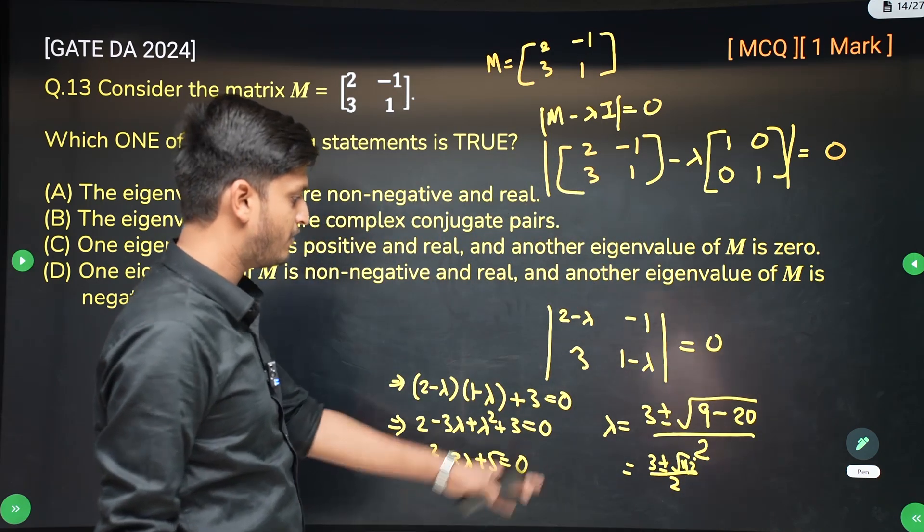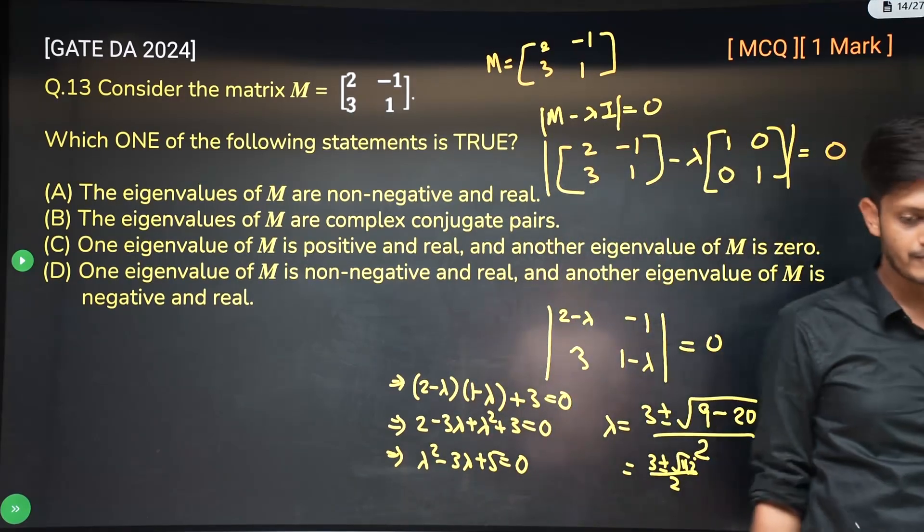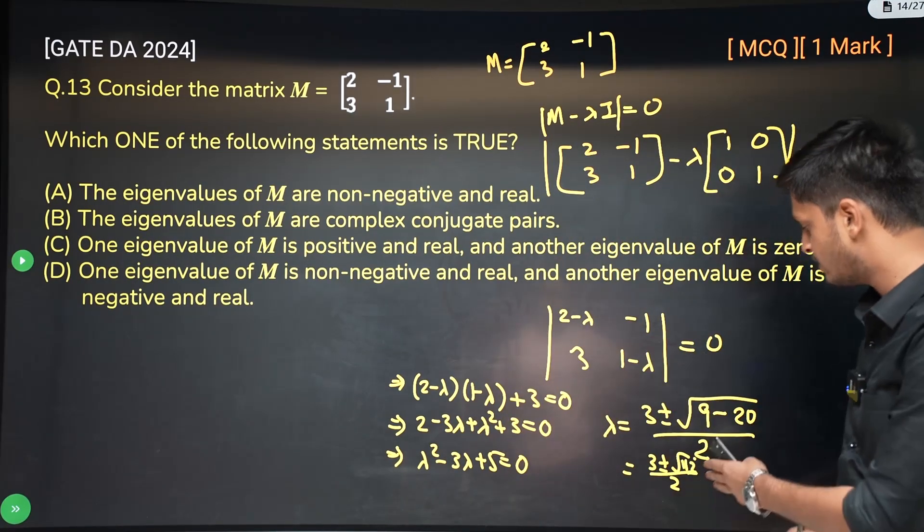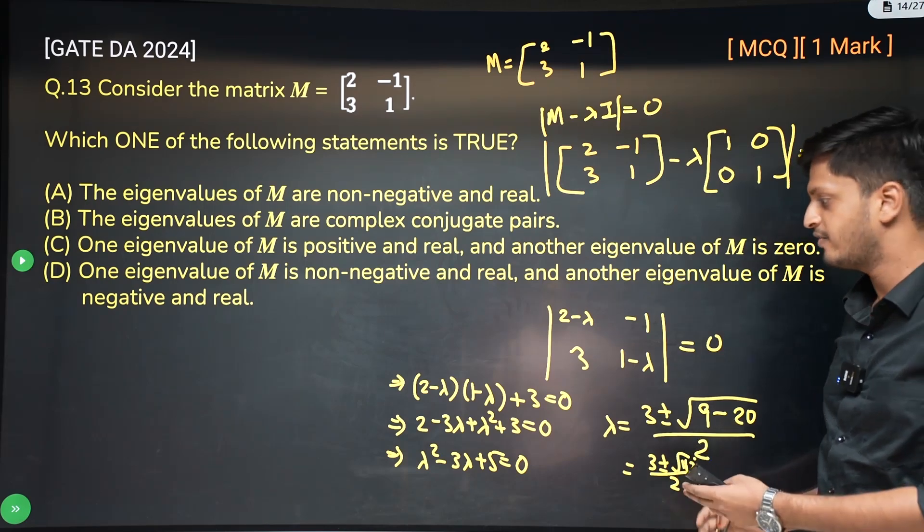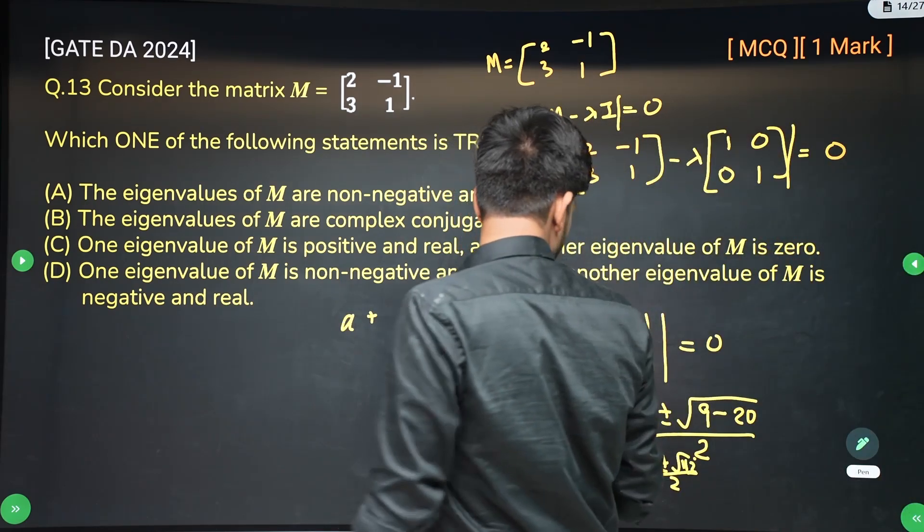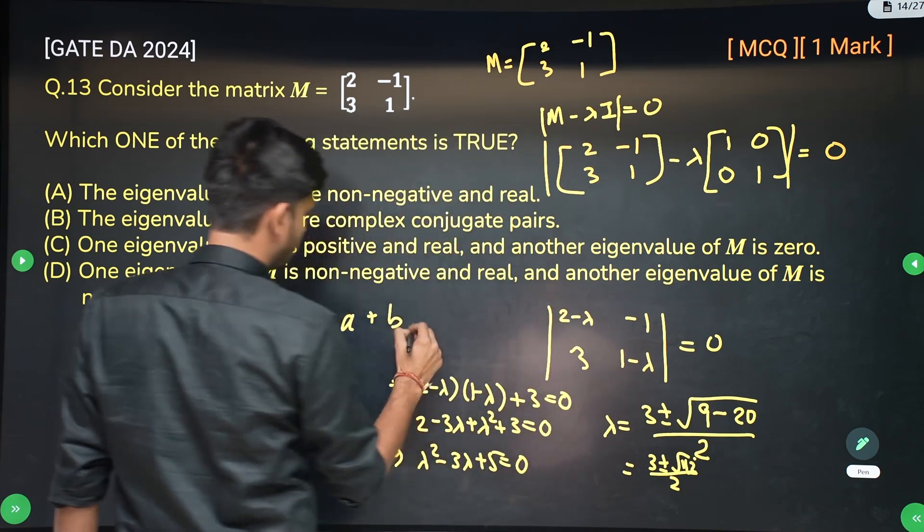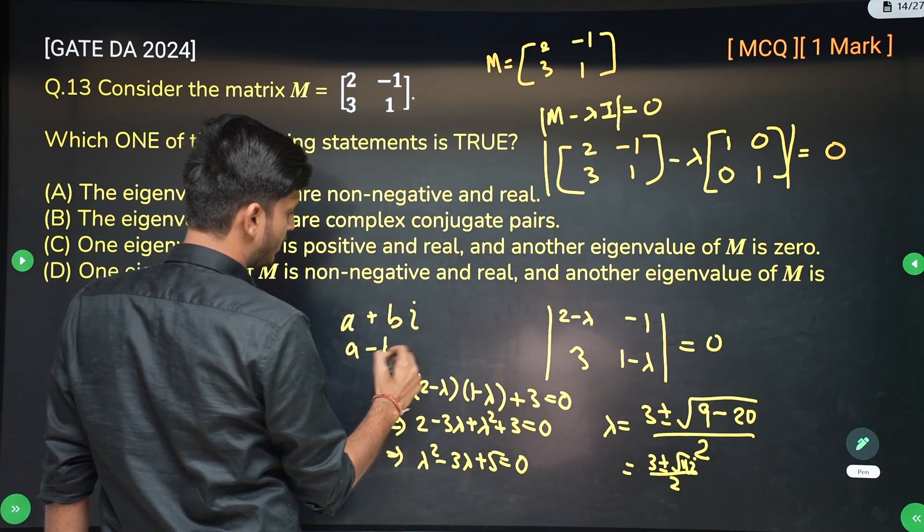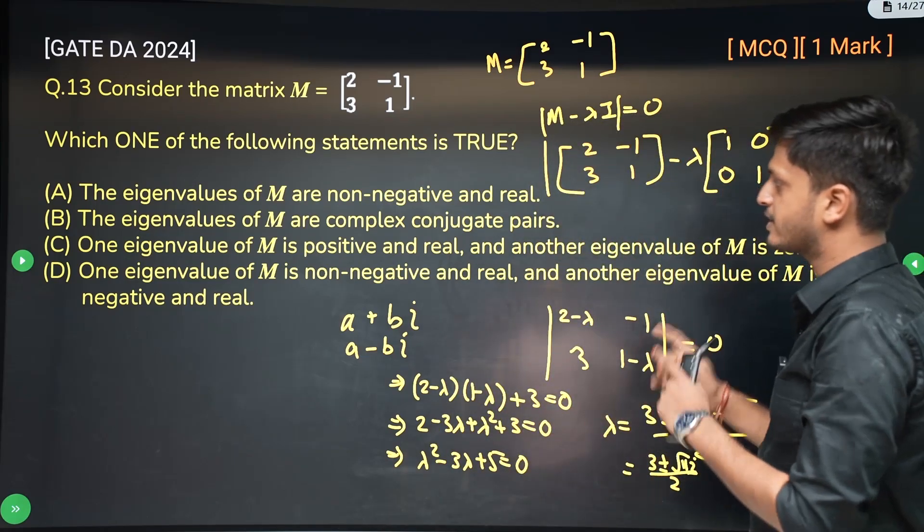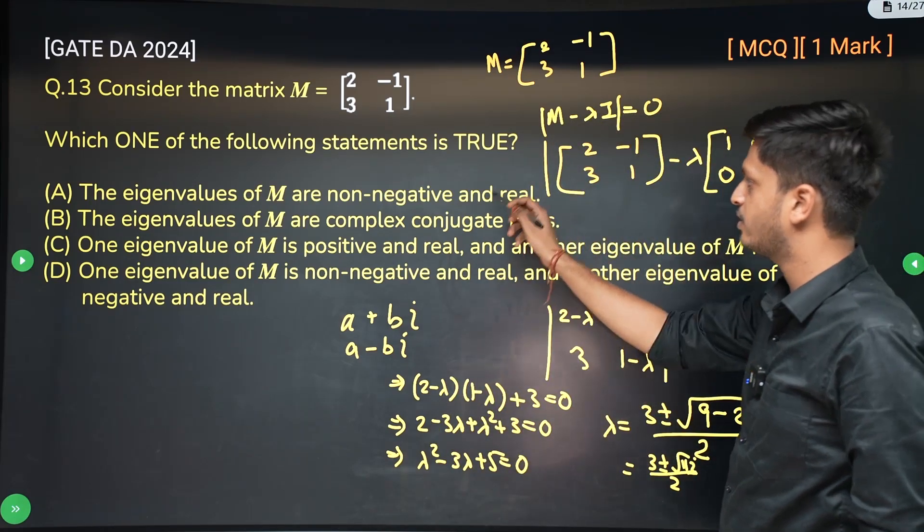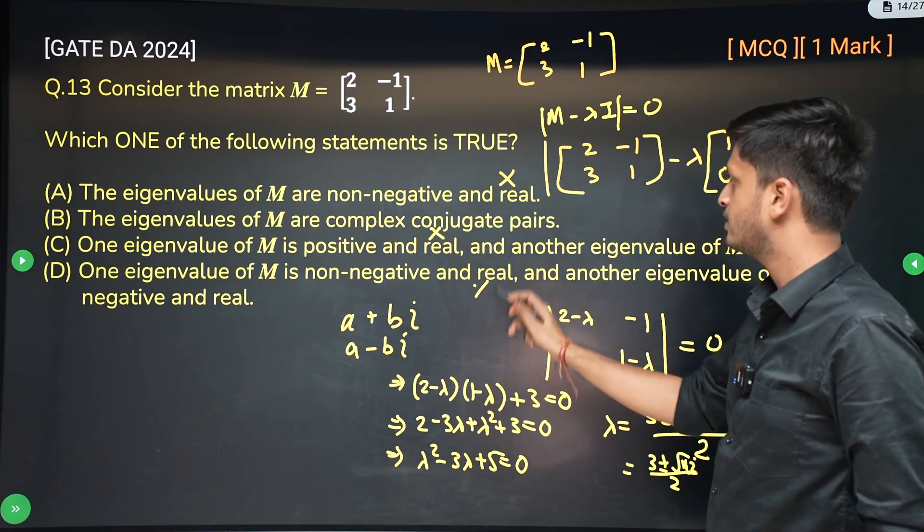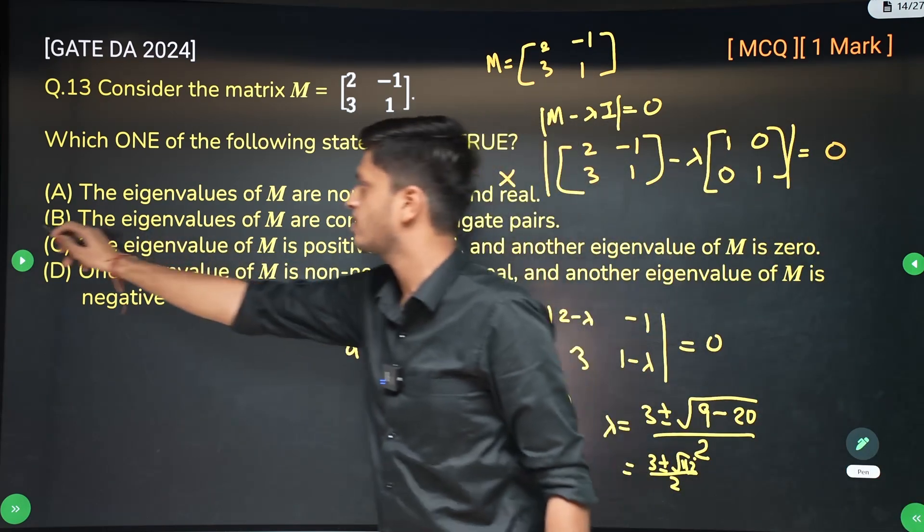So here we can see that the eigenvalues of this matrix are not real. They are actually complex numbers and we know that a plus b iota and a minus b iota are complex conjugate of each other. So the eigenvalues of this matrix are complex conjugate pairs. They are not real, they are actually complex conjugate pairs. So option B.